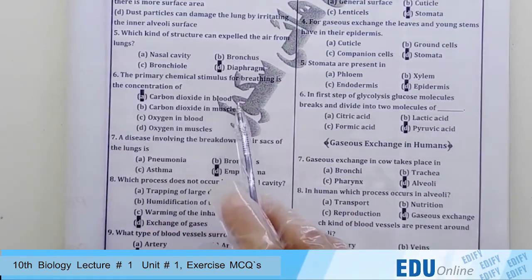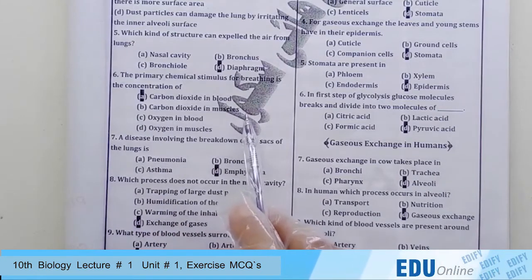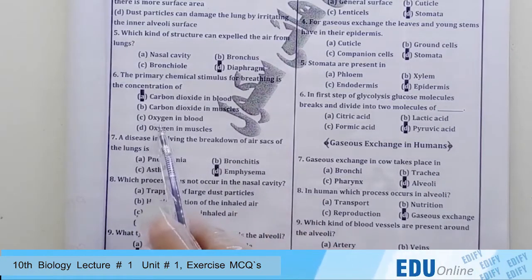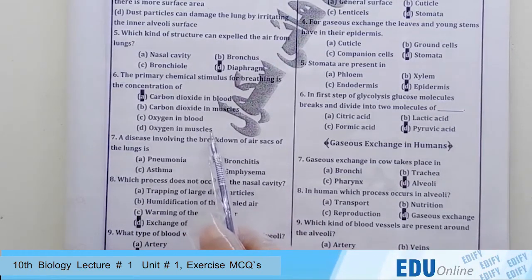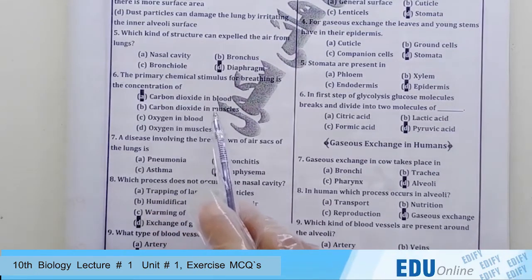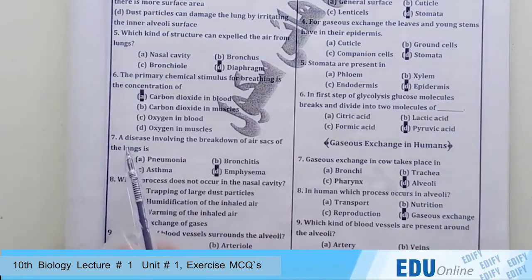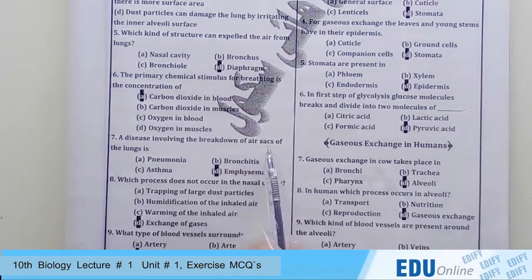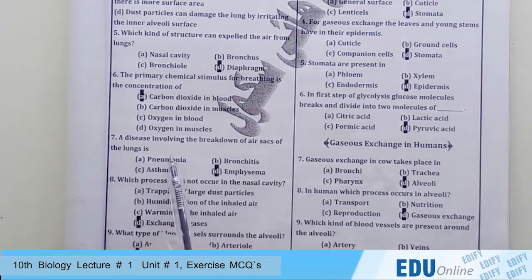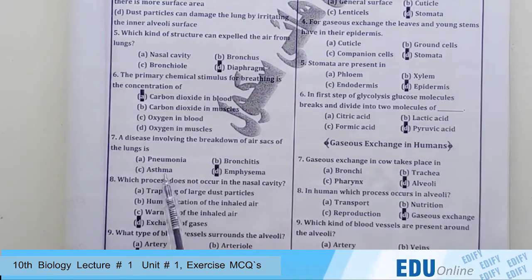Next question: the primary chemical stimulus for breathing is the concentration of — carbon dioxide in blood, carbon dioxide in muscles, oxygen in blood, or oxygen in muscles? The answer is carbon dioxide in blood.